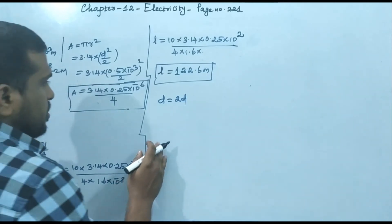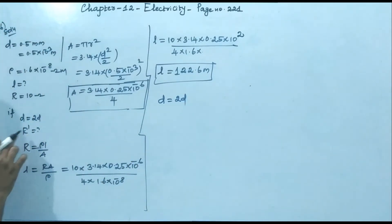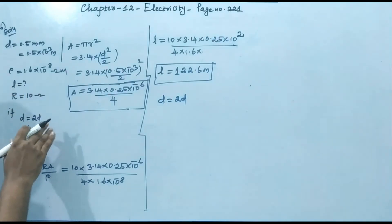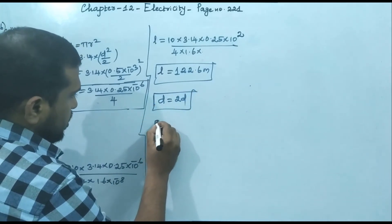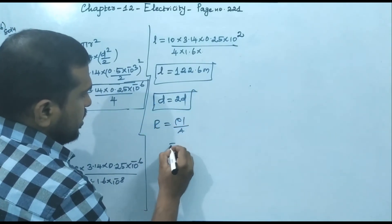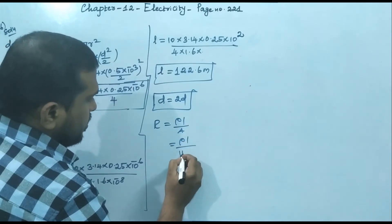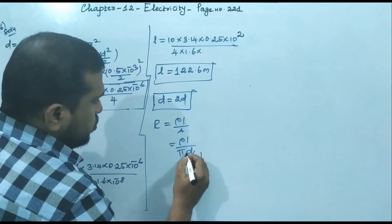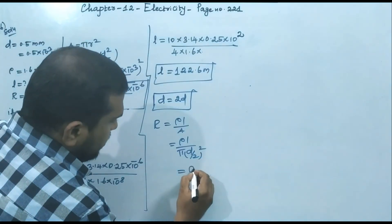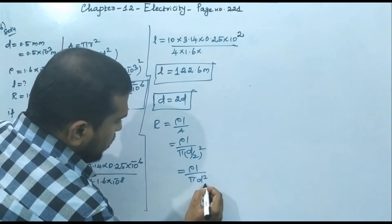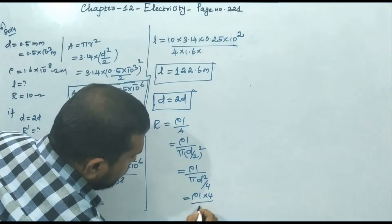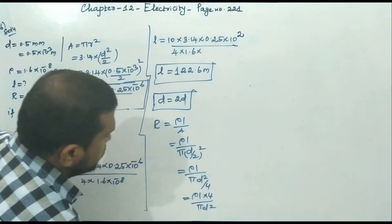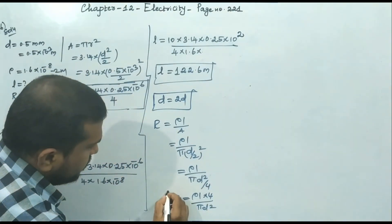For the second part, if the diameter is doubled to 2d, we find the new resistance. Starting from R = ρL/A = ρL / π(d/2)², we simplify to get R = 4ρL / πd². This is equation 1 for the original resistance.